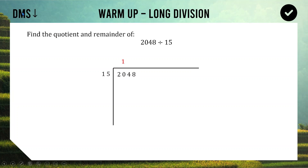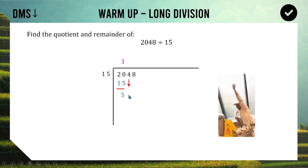The next step is to Multiply. The answer you got on top — that's going to multiply whatever's out the front, and we write the answer underneath. So 1 times 15 is 15. Third step is Subtract: we draw a line and do 20 minus 15, which gives us 5. The last step is to Drop down the next digit — in this case the 4 drops down and joins the 5 to make 54.